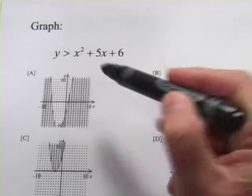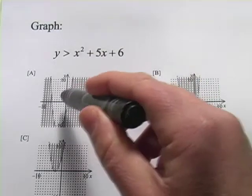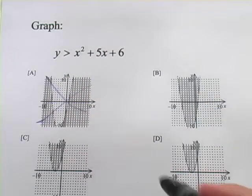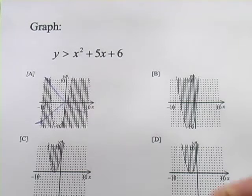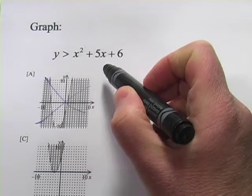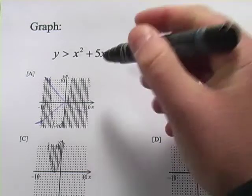In this one, because we have y is greater than and it's an upward facing parabola, we know it's not going to be this one where the outside of the parabola is shaded in. It's going to be one of these. So how do we go about identifying which one it is? Well, I would probably solve for x here so I had the x-intercepts and could determine between b and c and d. So let's try that.